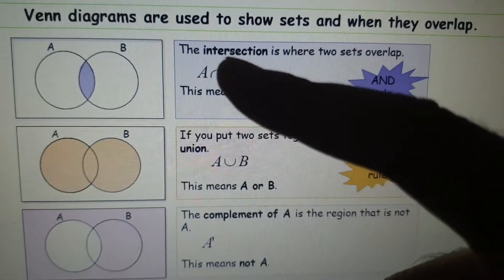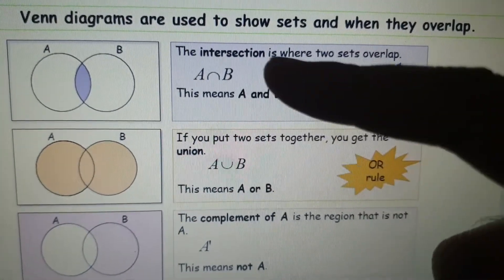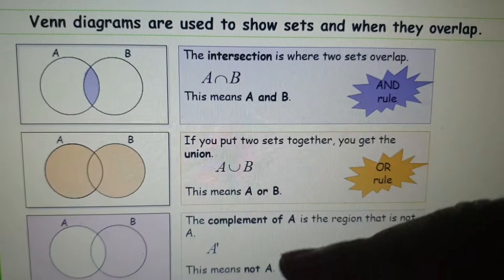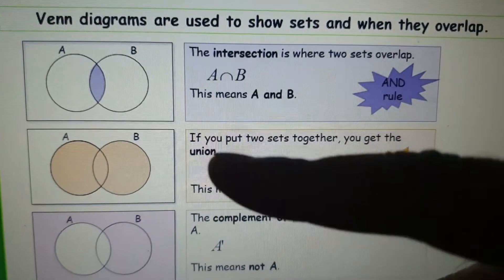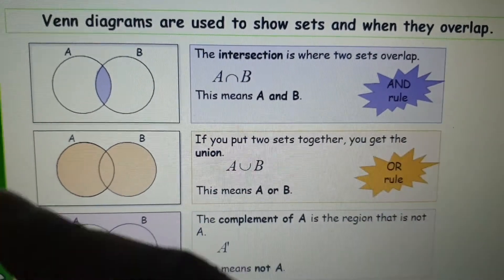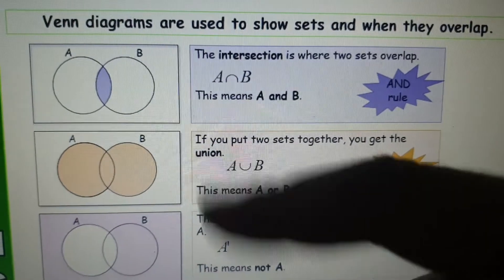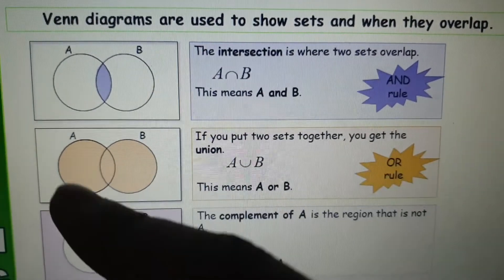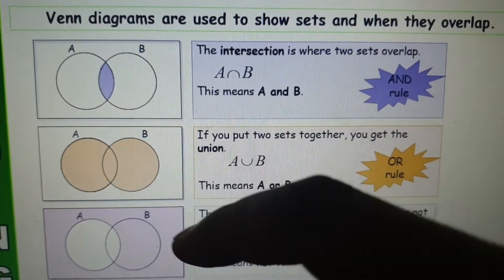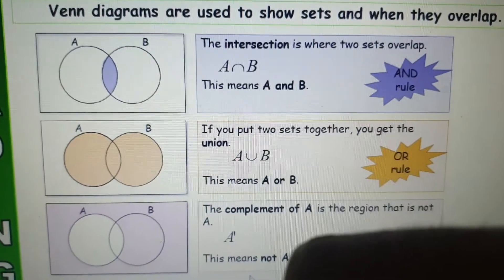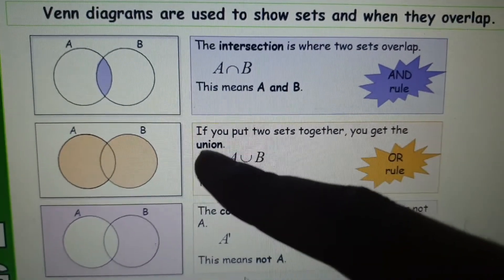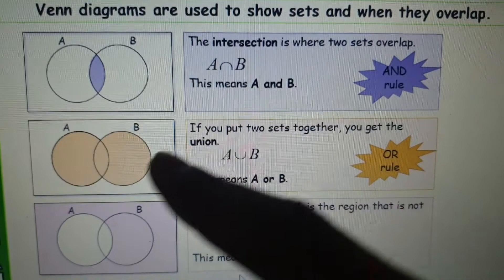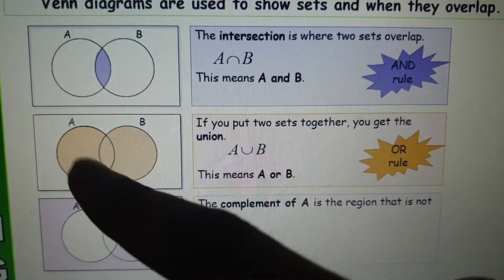The AND rule is for the intersection which you've got A ∩ B, and the OR rule is when you've got A union B. It's a bit tricky because this in your mind is A and B and this is just the intersection, but just remember when you've got union and this U, it means everything in A and B.